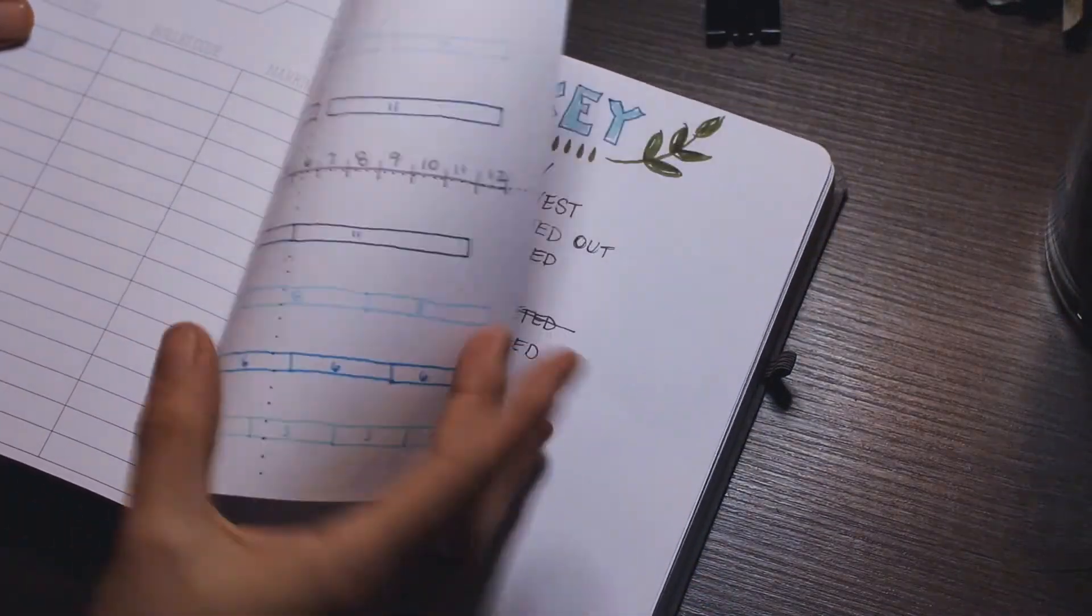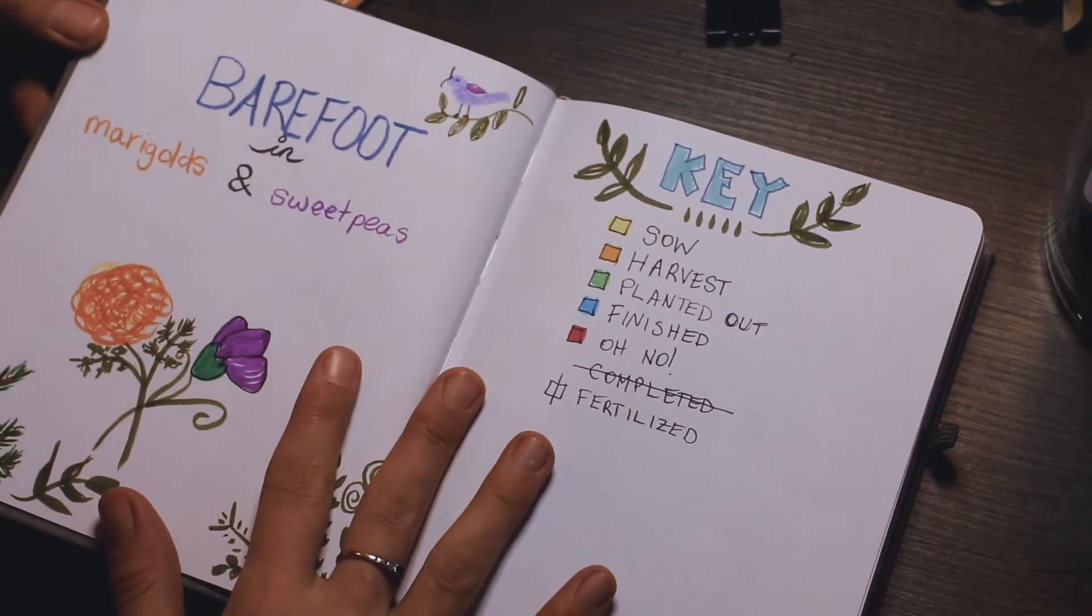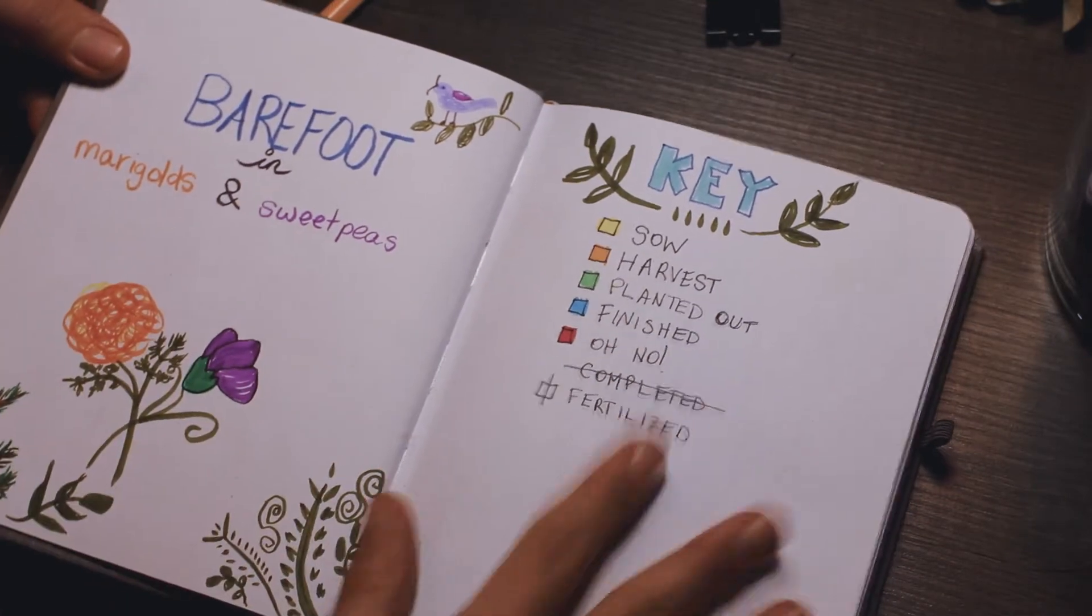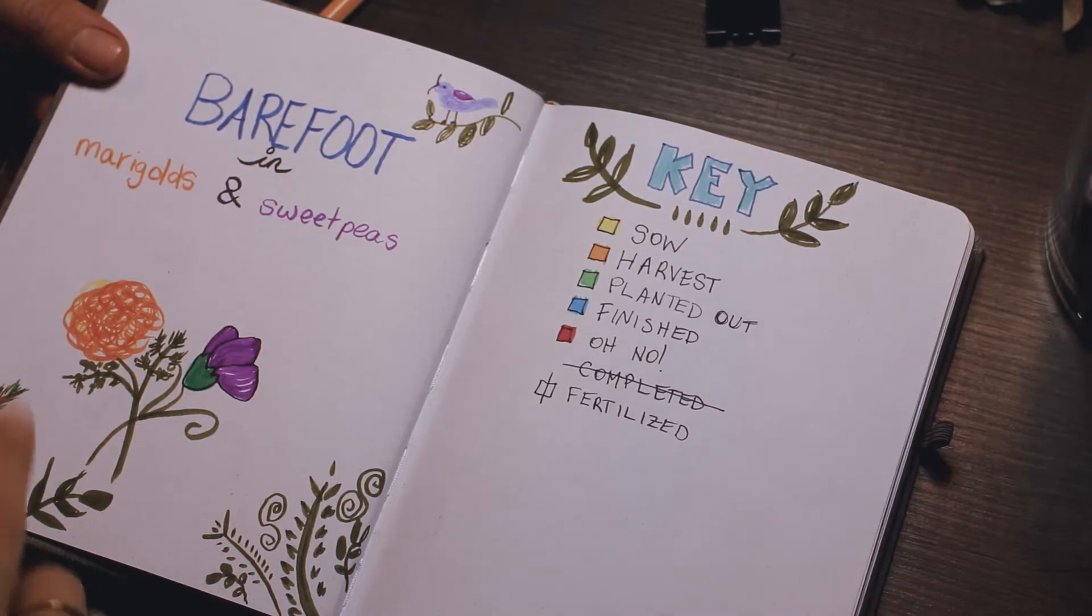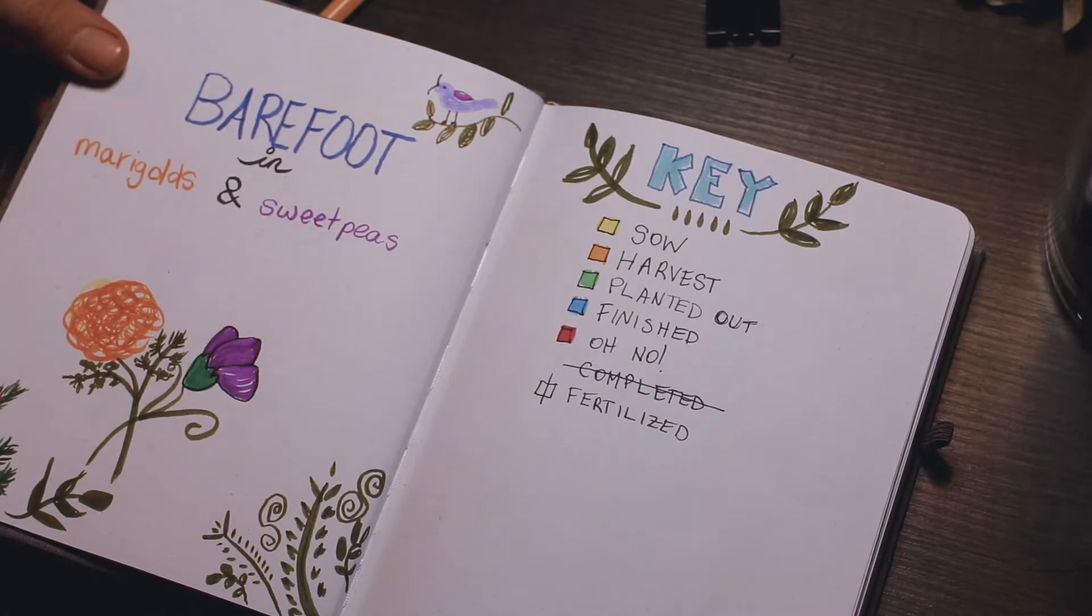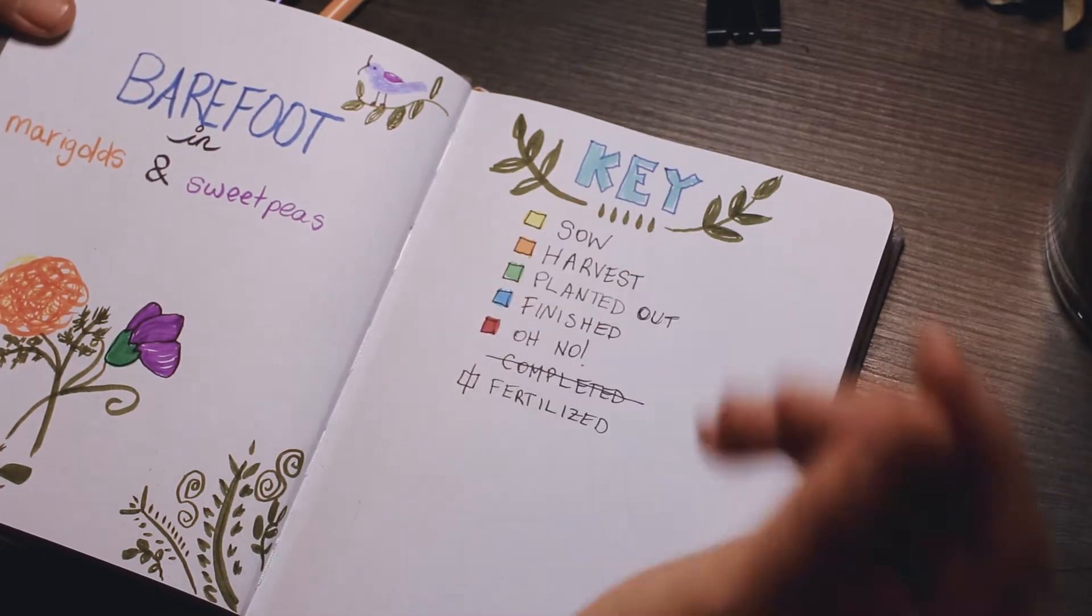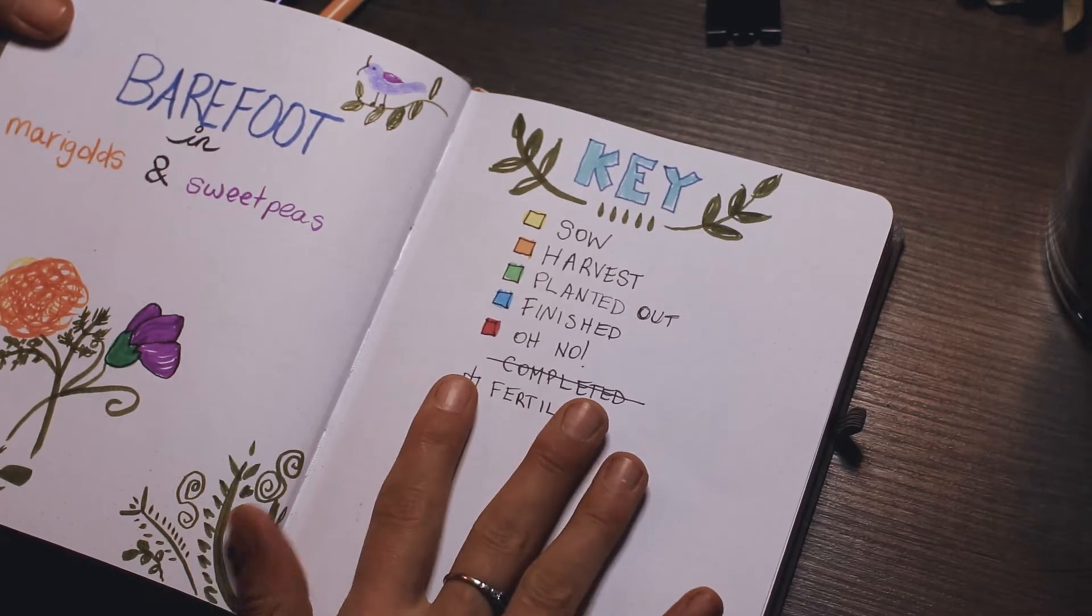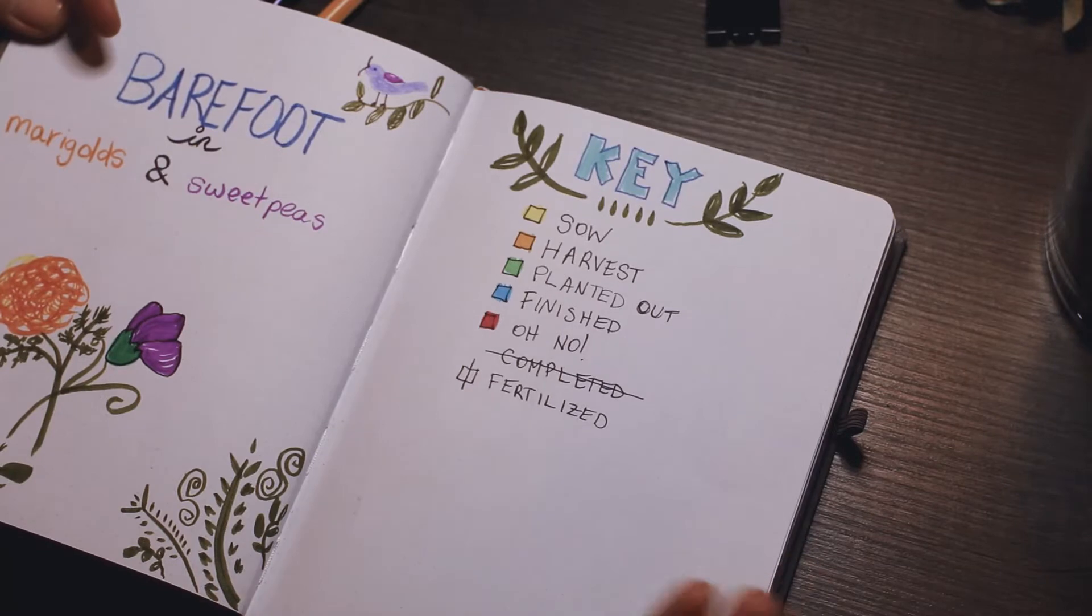So this is what I call my little humble abode here: Barefoot and Marigolds and Sweet Peas. Like I said I cannot draw anything special so this is what it is. I started drawing it and I wasn't super happy about it but whatever. And this is the key so when I have little tasks I need to do I can complete it. I left this part here blank because I'm sure that I will add things as the year goes on.